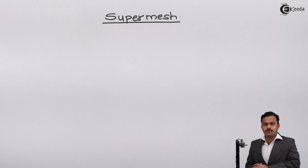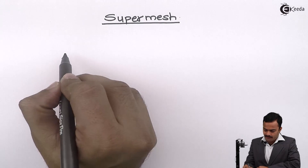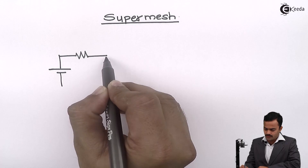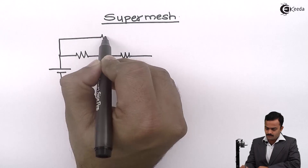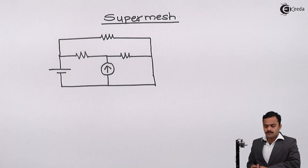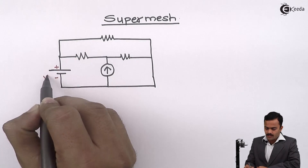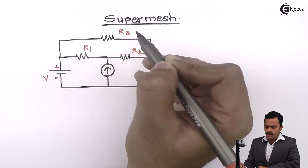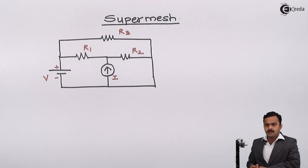In this video we are going to see the modification in mesh analysis, and that is super mesh. To explain the concept of super mesh, let's take a numerical having a voltage source, resistances, and a current source. Let's connect a few more resistances and give values to them. The voltage source has value V, the resistances are R1, R2, and R3, and the current source has value I.